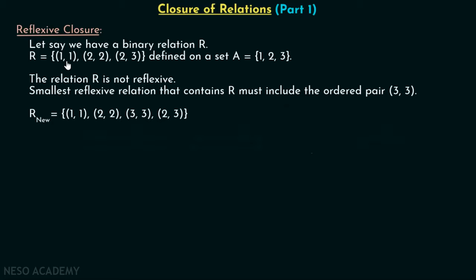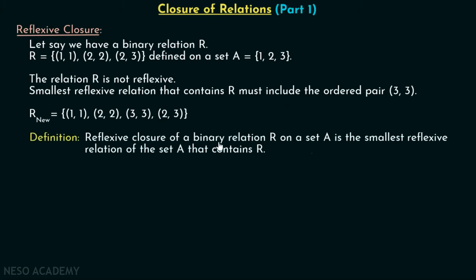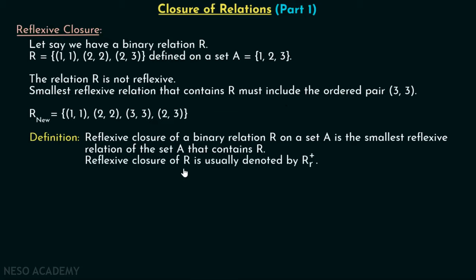Now let's come to the definition of Reflexive Closure. The reflexive closure of a binary relation R on a set A is the smallest reflexive relation of the set A that contains R. Whenever we want to find the reflexive closure of a binary relation R, we must find the smallest reflexive relation of the set A that contains R. Reflexive closure of R is usually denoted by R⁺. Formally, R⁺ = R ∪ {(a, a) | a ∈ A}.